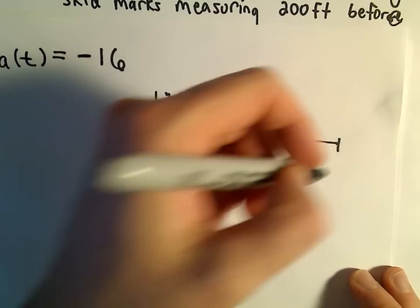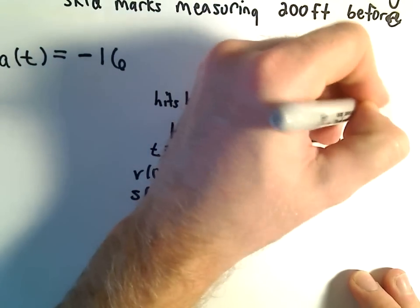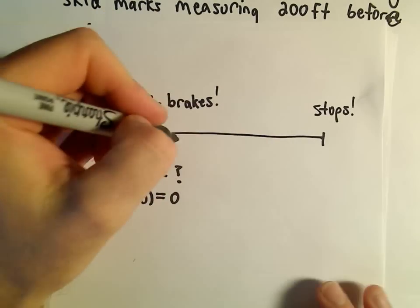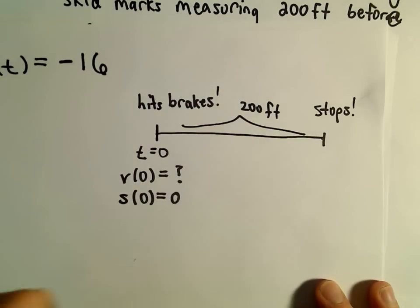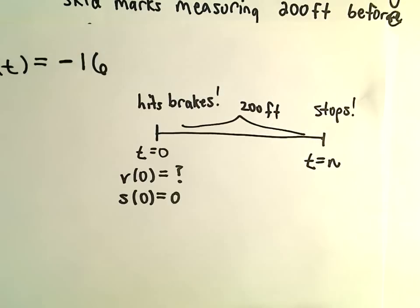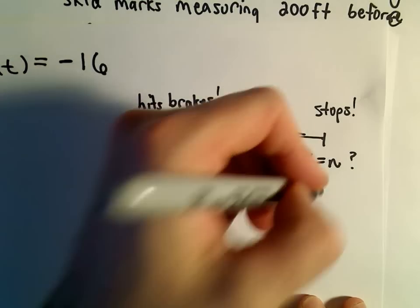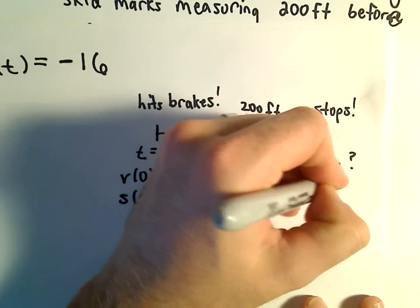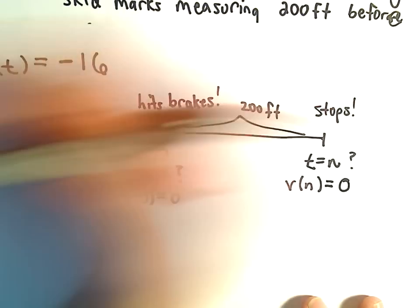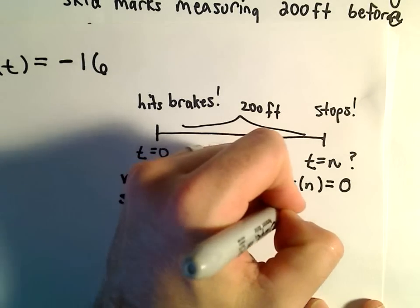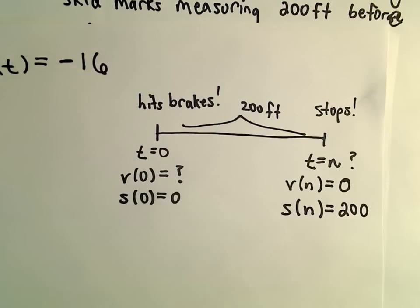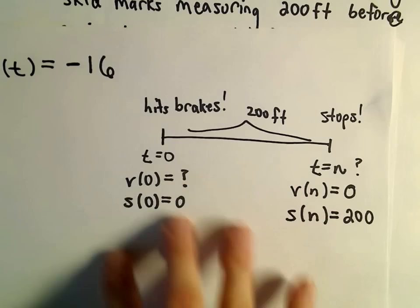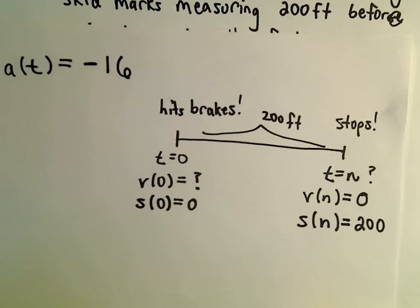We don't know how long it takes the car to stop. At that point, we'll say the car stops. But we know a couple things: we've traveled a total of 200 feet. At time t equals n — because I don't know how long that is — after n seconds we stop. The velocity after n seconds would have to be zero because we've stopped. The distance traveled after n seconds will be 200 feet. I've pretty much dissected all the information in the problem and have a lot of initial conditions to work with.